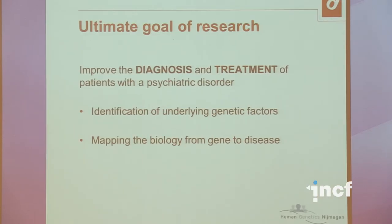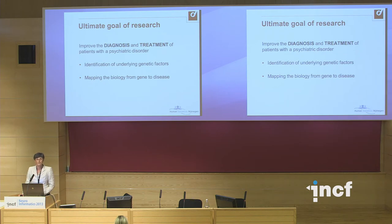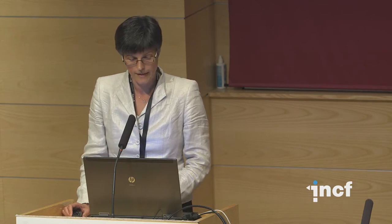We approach our research by trying to identify the genetic factors that underlie psychiatric disorders, and also by trying to map the biology that leads from the genetic variation to disease risk. I want to show you both sides of the coin: first, going into gene finding in psychiatric disorders — the models and some of the findings — and then moving into pathways from genes to disease.